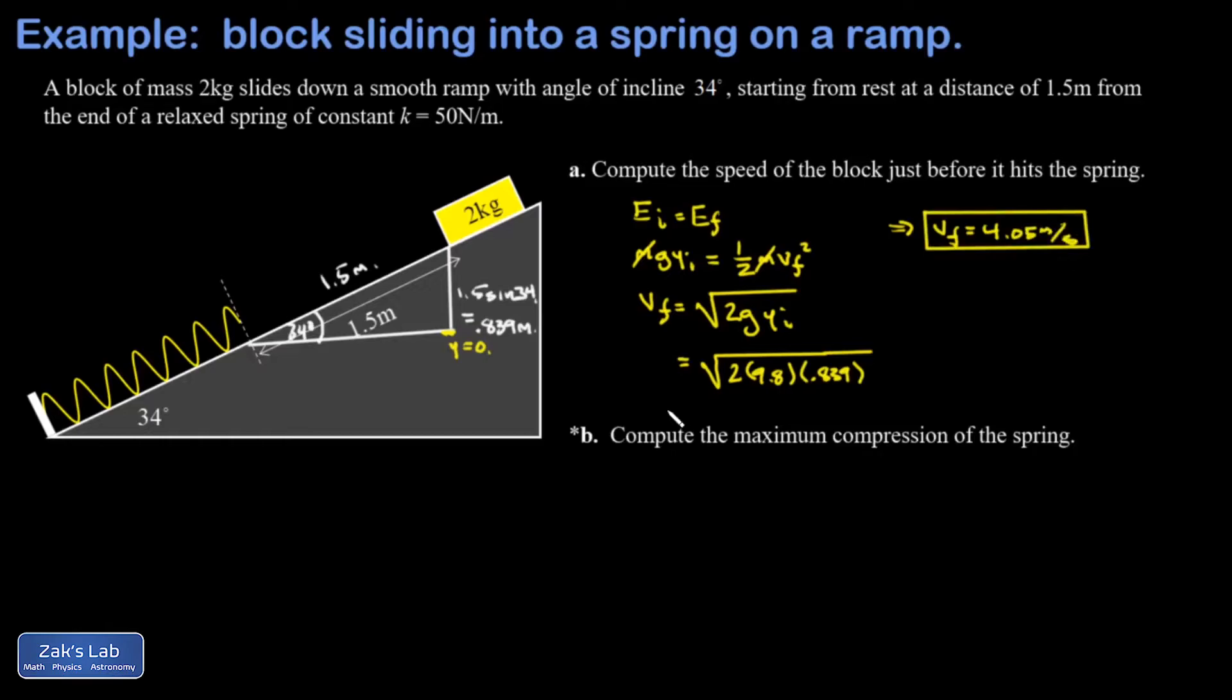Part b is the tricky part of the problem partly because the setup is more difficult and partly because the math is more difficult. So I'll go ahead and draw the block in the final state that we're referring to in part b. I want the maximum compression of the spring and this means the spring has brought the mass to a stop. The spring is now more compressed than it used to be and since I don't know what the compression length is, that's what I'm trying to solve for, I'm going to go ahead and call that d.